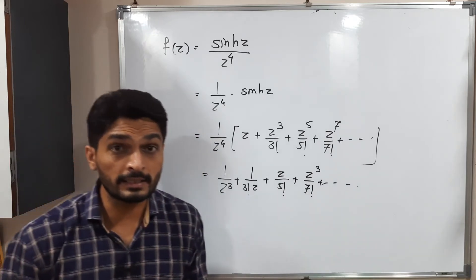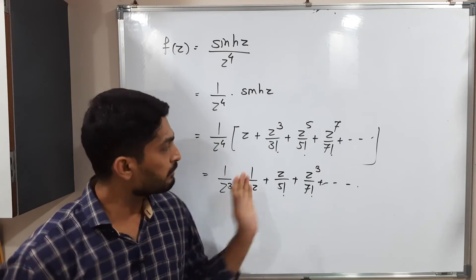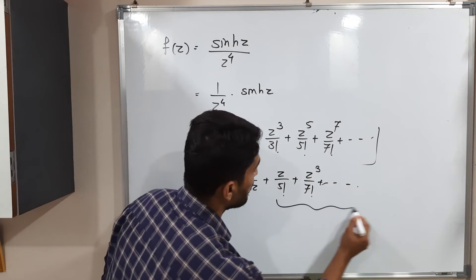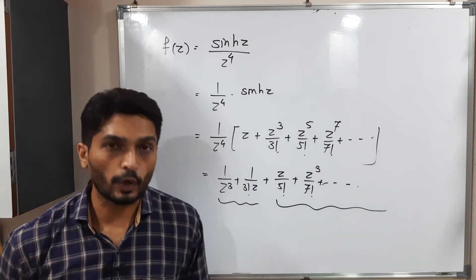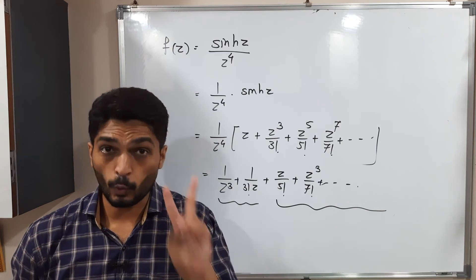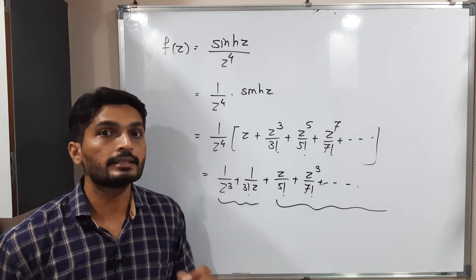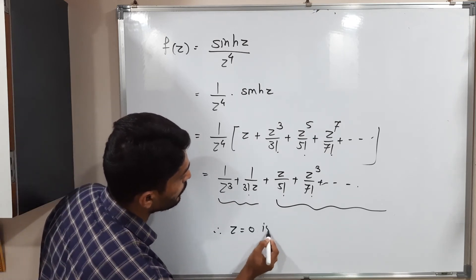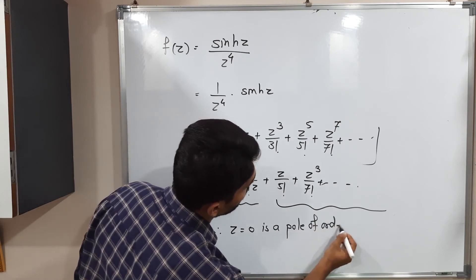As you can easily see, for the first two terms, z lies in the denominator, but for remaining terms that z and its power lies in the numerator. So this is the analytic part of the Laurent series and this is the principal part of the Laurent series. In the principal part, there are only two terms. And what is the largest power of z? That is three.